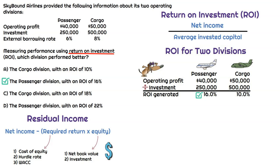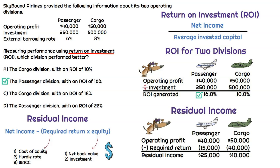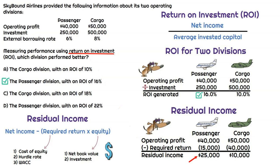For residual income, we have the formula. It's not one-for-one what they give us in the question, but they do give us enough information to calculate residual income for each entity. Let's calculate residual income for passenger and cargo. First, we calculate the required return. For passenger, that's the investment of $250,000 times the external borrowing rate of 6%, which equals $15,000. Subtracting that from operating profit gives residual income for passenger of $25,000. For cargo, we take $500,000 times the external borrowing rate of 8%, which equals $40,000. Subtracting that from operating profit of $50,000 gives cargo a residual income of $10,000.